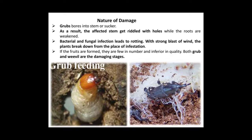The Nature of Damage of the Rootstock Weevil: grubs bore into the stem or the sucker. As a result, the affected stem gets riddled with holes while the roots are weakened. Bacterial and fungal infection leads to rotting. With a strong blast of wind, the plants break down from the place of infestation. If fruits are formed, they are few in number and inferior in quality. Both grub and weevil are the damaging stages.